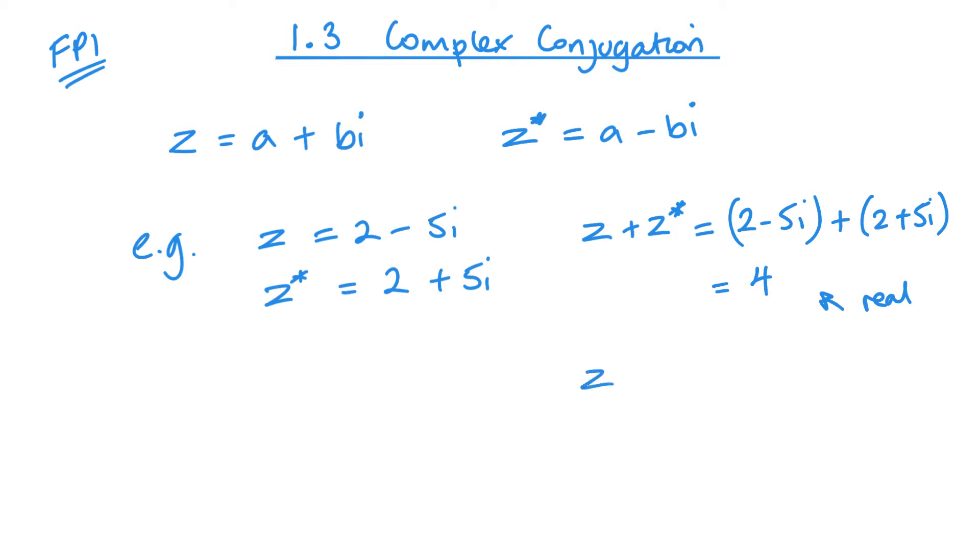And if I look at the product of these, so 2 minus 5i times 2 plus 5i, again 2 times 4, that's going to give me plus 10i minus 10i minus 25i squared. So that's going to be 4 plus 25 in this case, remembering that i squared is negative 1.